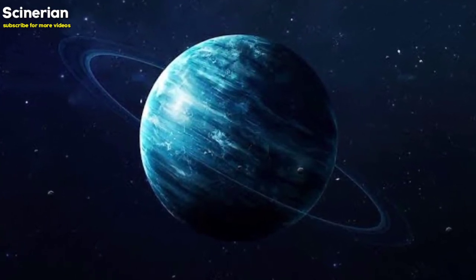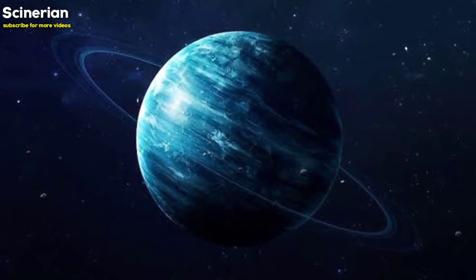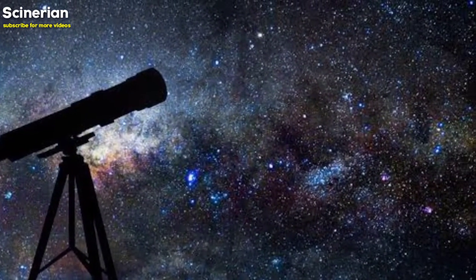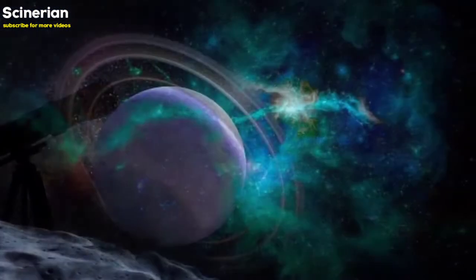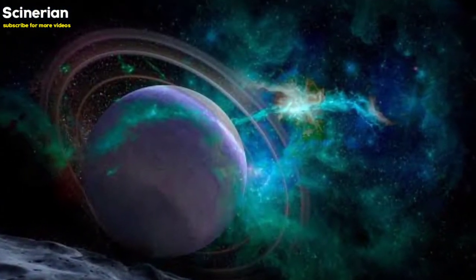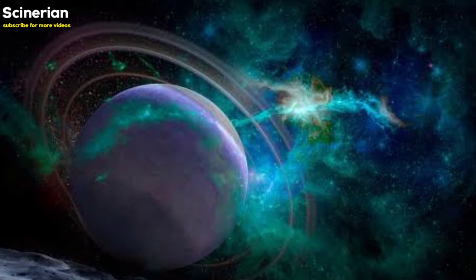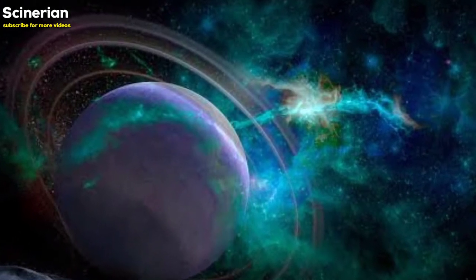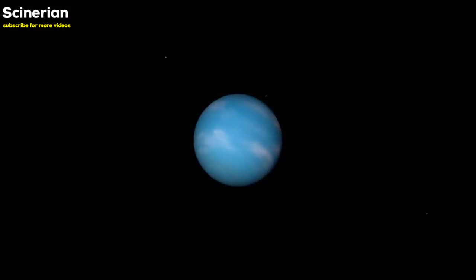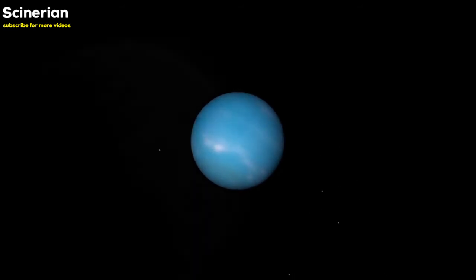Do you know Uranus can actually be seen without the help of a telescope? Yes, the apparent magnitude of the planet that lies between 5.3 and 6.03 makes it possible for an aided human eye to spot Uranus in the night sky. However, factors like light pollution can make it difficult to do so.